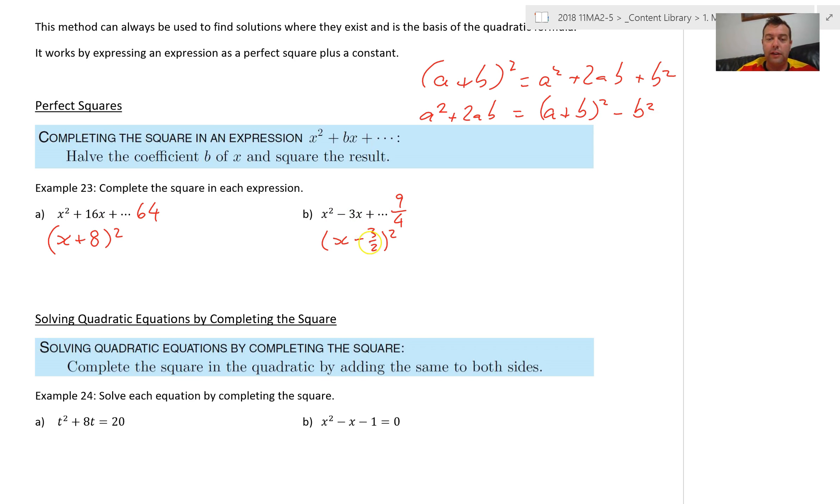Same thing goes here. Halve negative 3, it's negative 3 over 2 or negative 1 and a half. Square that, I always get a positive when I square it, 9 over 4. This is our perfect square. So if it were written like this, x squared minus 3x plus 9 over 4, you go hey I know that's a perfect square. I can express it as x minus 3 over 2 all squared.